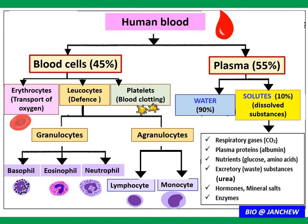Here is a detailed flow chart to help us understand the composition of human blood. Human blood consists of blood cells, which make up 45% of volume, and blood plasma, which makes up 55%. Blood cells are divided into three types: erythrocytes or red blood cells that transport oxygen; leukocytes or white blood cells involved in defense against pathogens; and platelets involved in blood clotting.